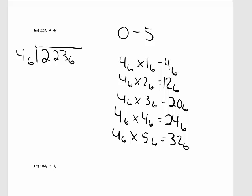4 times 2 is 8 — 8 divided by 6 is 1 with a remainder of 2. 4 times 3 is 12 — 12 divided by 6 is 2 with a remainder of 0. 4 times 4 is 16 — 16 divided by 6 is 2 with a remainder of 4. And 4 times 5 is 20 — 20 divided by 6 is 3 with a remainder of 2. Now that we have these multiples, let's divide.